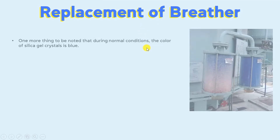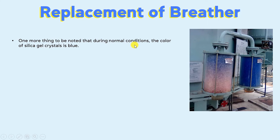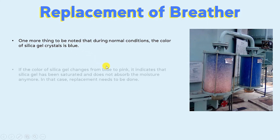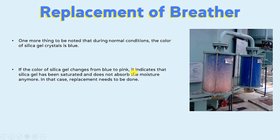Replacement of Breather. One more thing to note: during normal conditions, the color of silica gel crystals is blue. If the color of silica gel changes from blue to pink, it indicates that the silica gel has been saturated and does not absorb moisture anymore. As you can see in the diagram, during normal conditions the color of silica gel crystals is blue. However, if the color changes from blue to pink, it means the silica gel crystals are unable to absorb moisture from the atmospheric air. In that case, replenishment of the breather needs to be done for proper absorption of moisture, so that it doesn't affect the insulation properties of transformer oil.